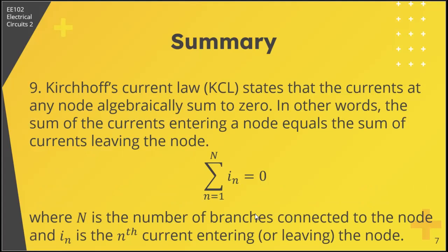Ninth, Kirchhoff's current law, or KCL, states that the currents at any node algebraically sum to zero. In other words, the sum of the currents entering a node equals the sum of currents leaving the node.